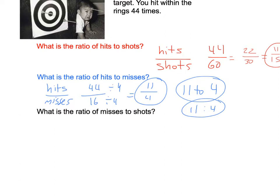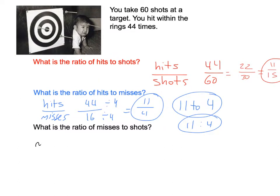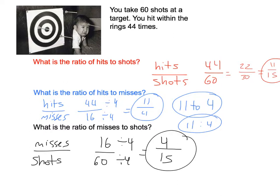Alright, misses to shots. Let's talk about that. So misses is going to go on top, shots on bottom. How many times did you miss? Well, we already said you missed 16 times. And how many times did you shoot? 60. So, let's try dividing by 4 again. 16 divided by 4 is 4. 60 divided by 4 is 15. Can't simplify that any further, so we're done there. But we could also write it like that. We could also write it like that. And we're done.